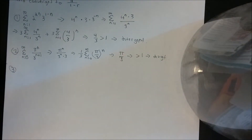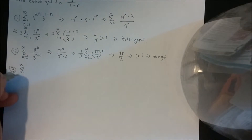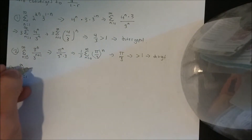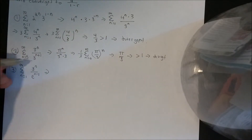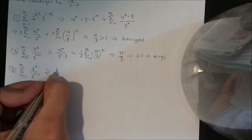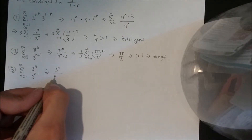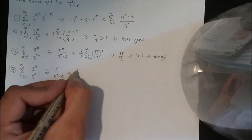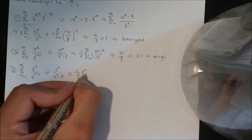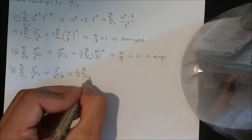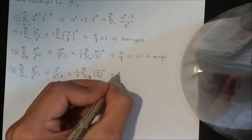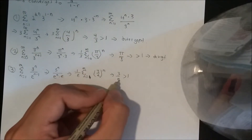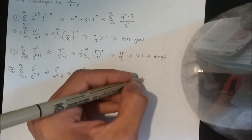Another example: the sum from n equals 1 to infinity of 3^n over e^(n minus 1). This is pretty much the same as before. We split e^(n-1) into e^n times e, bring the e out front, and we're left with (3/e) raised to the n. Since 3/e is greater than 1 — because e is between 2 and 3 — this one is also divergent.